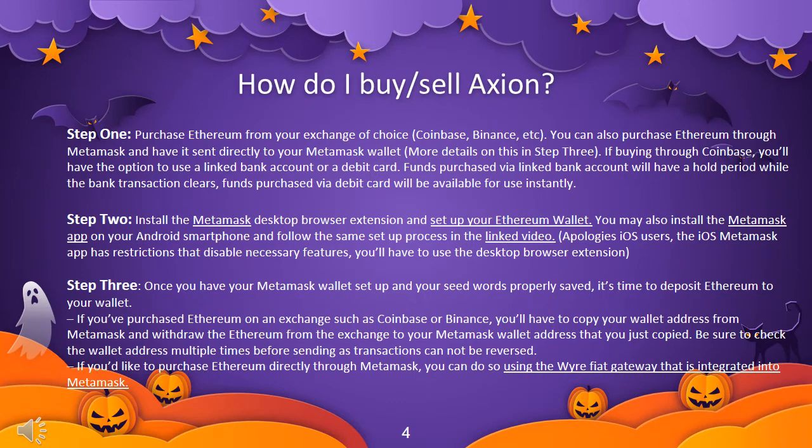How do I buy or sell Axion? Step 1: Purchase Ethereum from your exchange of choice — Coinbase, Binance, etc. You can also purchase Ethereum through Metamask and have it sent directly to your Metamask wallet. If buying through Coinbase, you'll have the option to use a linked bank account or a debit card. Funds purchased via linked bank account will have a hold period while the bank transaction clears; funds purchased via debit card will be available for use instantly.